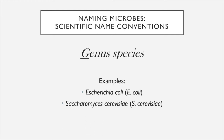Another example is Saccharomyces cerevisiae. Saccharomyces cerevisiae is a fungus, specifically a yeast. Myces means fungus, saccharo means sugar, and cerevisiae is named for the fact that this organism is used to make beer — it is a cognate to the Spanish word cerveza. This name literally means a sugar-eating fungus that brews beer.